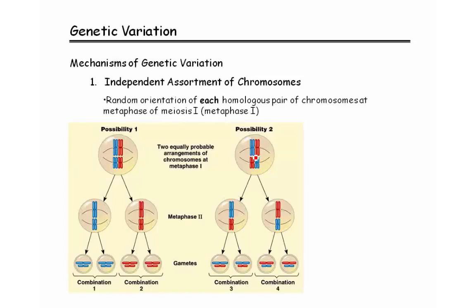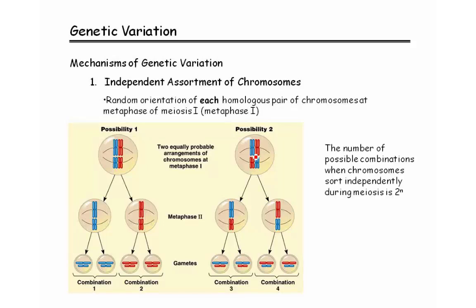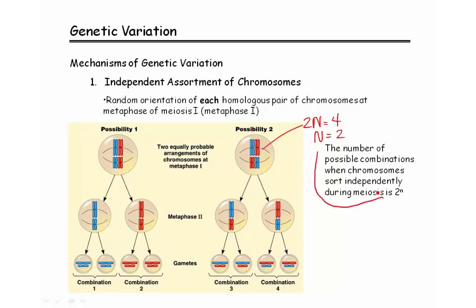As the number of chromosomes increases, the number of tetrads increases, and the number of combinations possible goes up as well. We can estimate this mathematically: the number of possible combinations when chromosomes sort independently during meiosis is 2 raised to the n power. In this example, starting with a diploid cell with four chromosomes total, 2n = 4, so n = 2. Plugging into the equation: 2 raised to the 2nd power equals 4, giving us four different combinations possible from this particular cell.